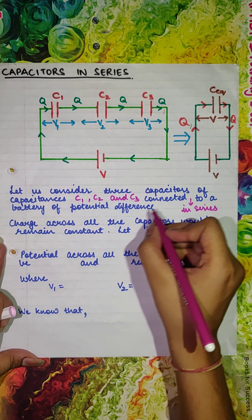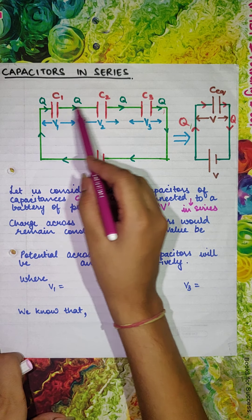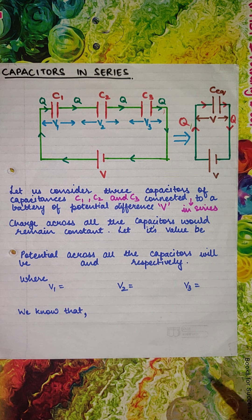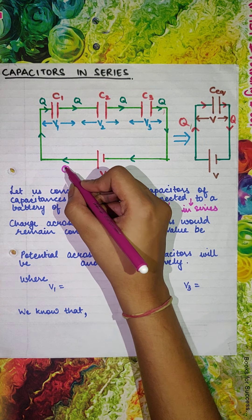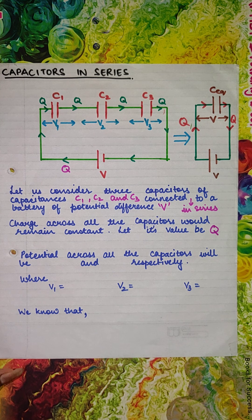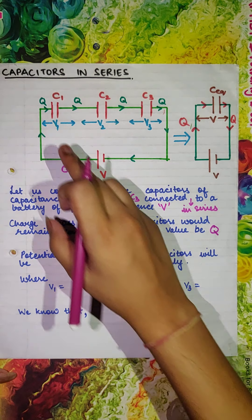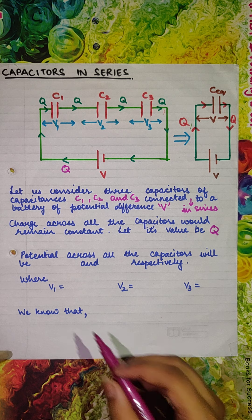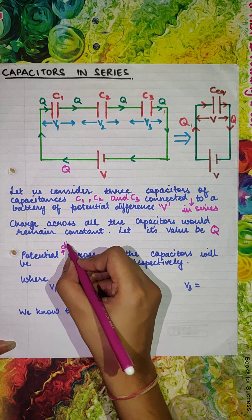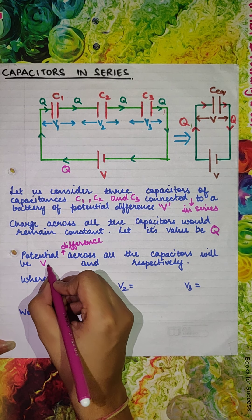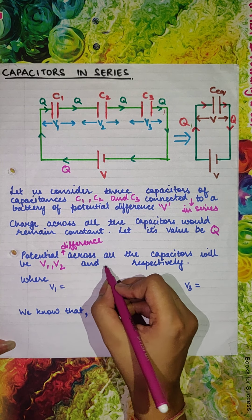The circuit is connected to a battery of potential difference V. Here the battery is having a potential difference V. Let Q be the charge supplied by the battery. In series combination the charge would remain constant and its value is Q. So across all the capacitors the value of the charge would be plus Q. The potential difference across all the capacitors would be different — it would be V1, V2 and V3 respectively.